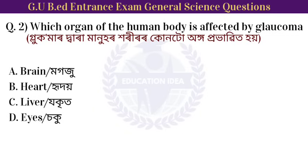Next question: which organ of the human body is affected by Glaucoma? Glaucoma affects which organ of the human body. Option: the eye. Glaucoma affects the eye of the human body.